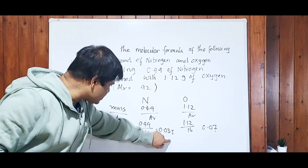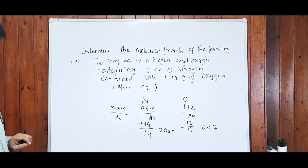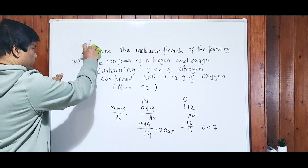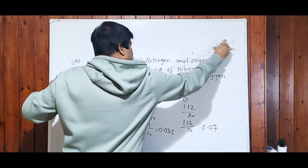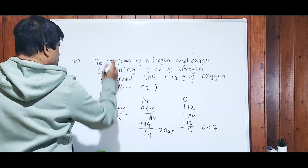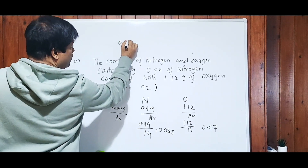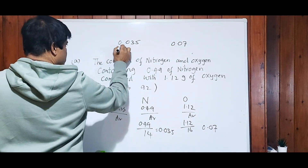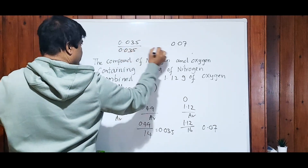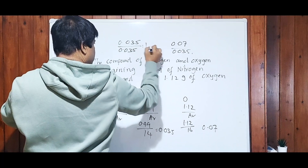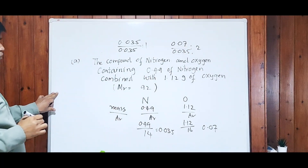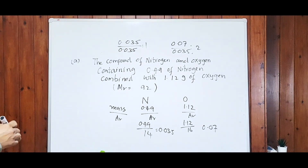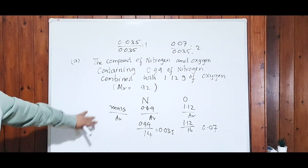Take out the simplest number, which is 0.035, and divide both values by it. So 0.035 ÷ 0.035 = 1 and 0.07 ÷ 0.035 = 2. The molar ratio is 1:2, so the empirical formula of nitrogen oxide is NO₂.